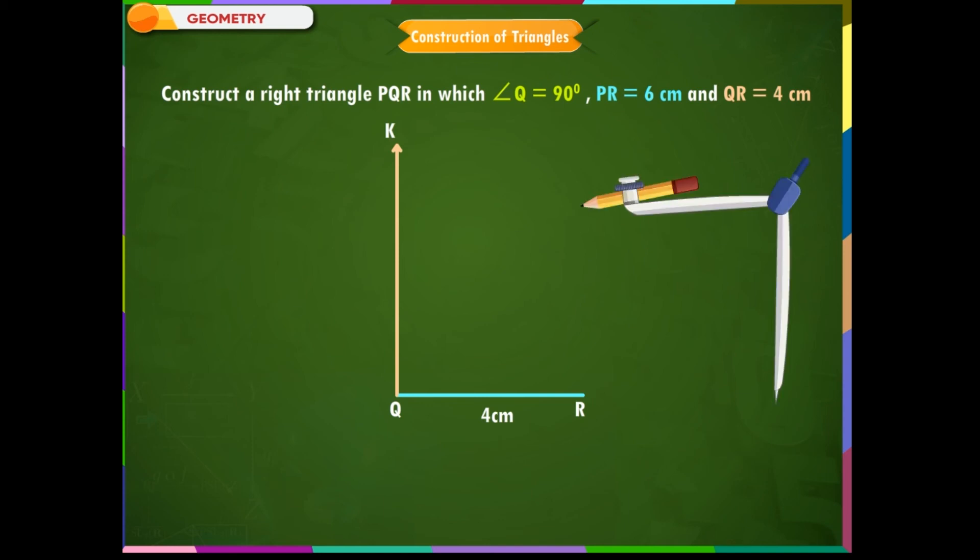Step 3: Take a compass, measure 6 cm on a scale, and cut off an arc on QK. Name the intersecting point of the arc and the line as P as shown in the figure. Now, RP is equal to 6 cm.